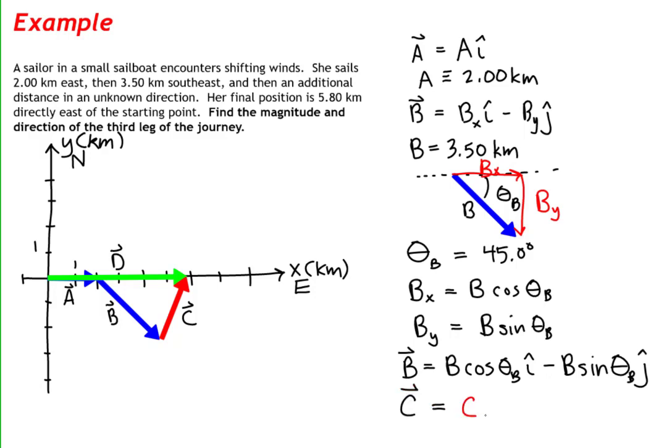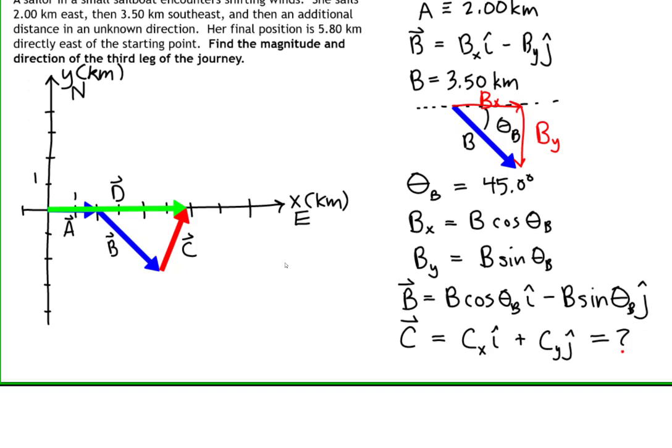C vector is the third leg of our journey, and it also has an x component and a y component as revealed in our graph. We don't know what the value of vector c is, but that is what we're trying to find.